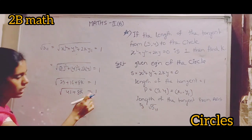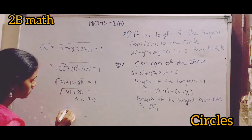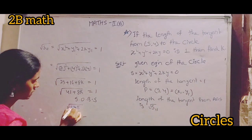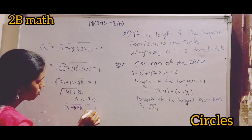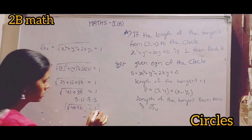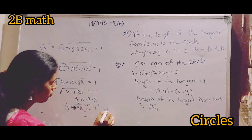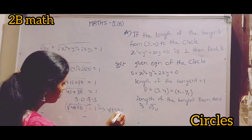Squaring on both sides: root 41 + 8k whole square equals 1 square. Square root cancels, 41 + 8k = 1.